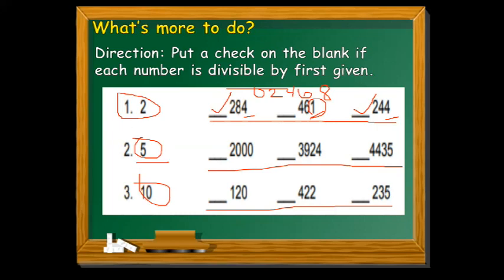Moving to the next question, given number is 5. For divisibility by 5, check the 1's digit — if it is 0 or 5, the number is divisible by 5. Number 1: the 1's digit is 0, so it is divisible by 5. Number 2: 3,924 — the last digit is 4, which is not 0 or 5, so it is not divisible by 5. And then 4,435 — the last digit is 5, so it is divisible by 5.